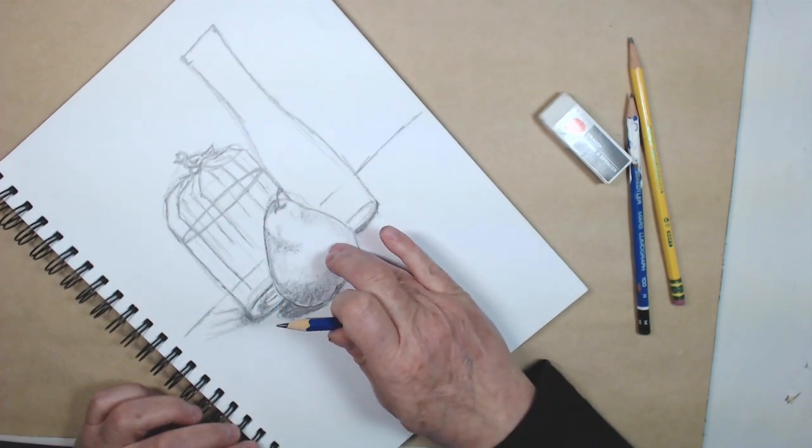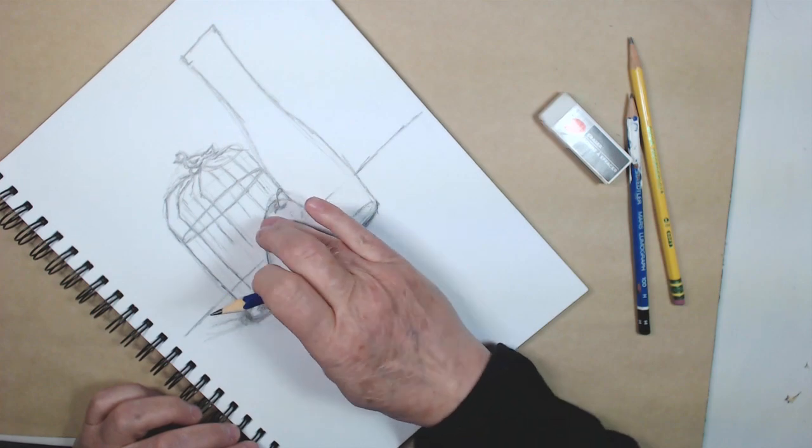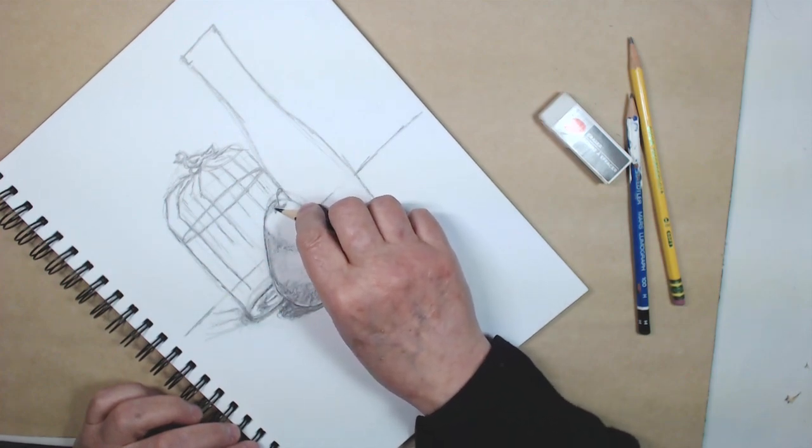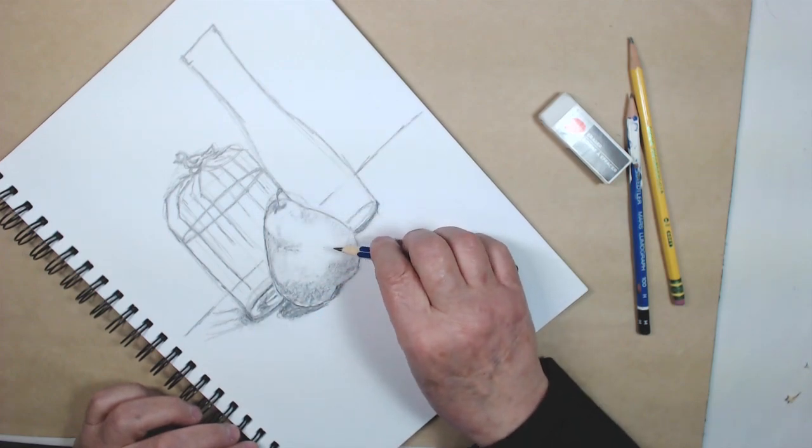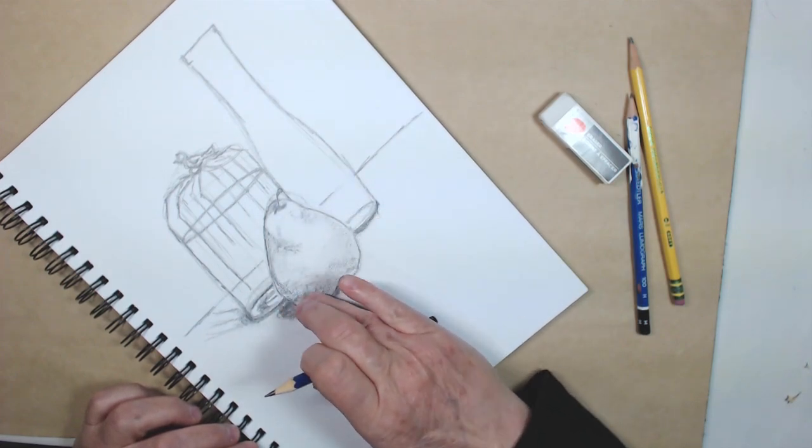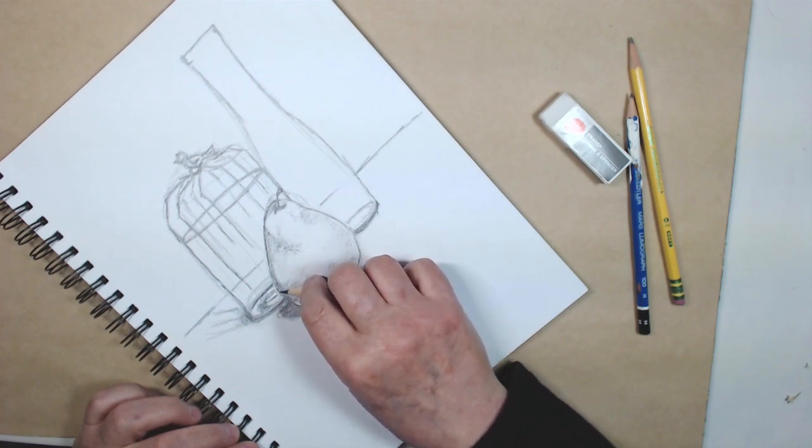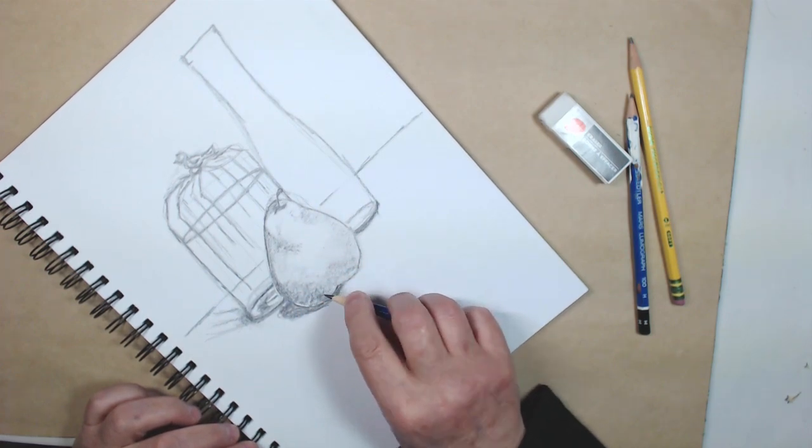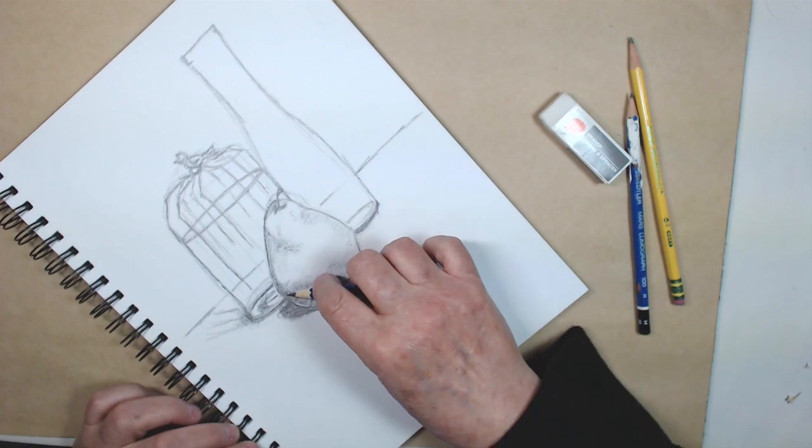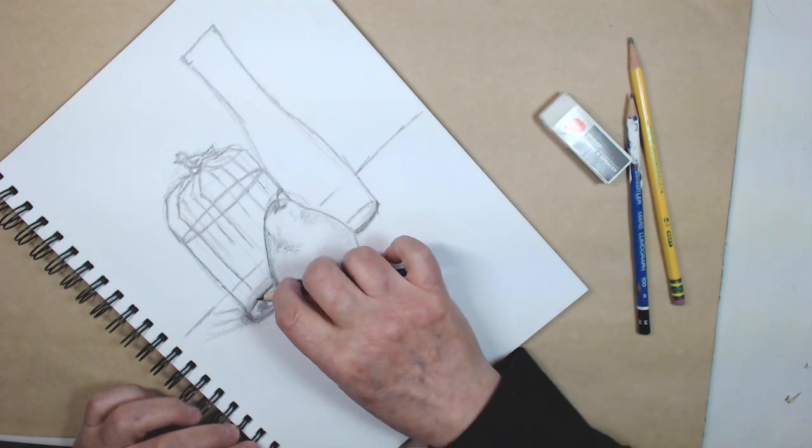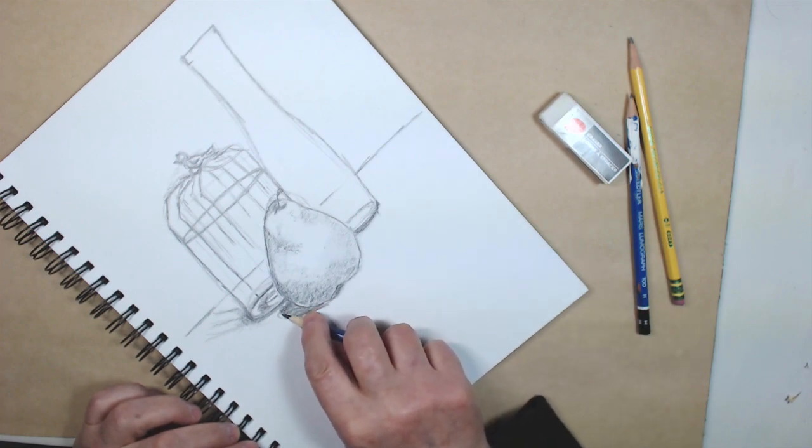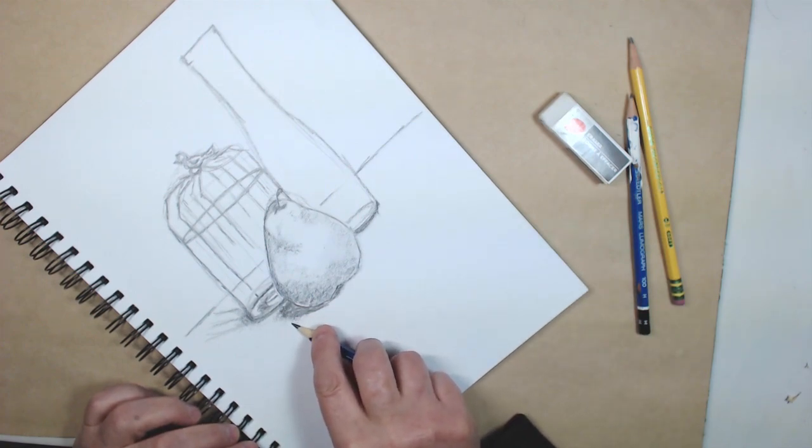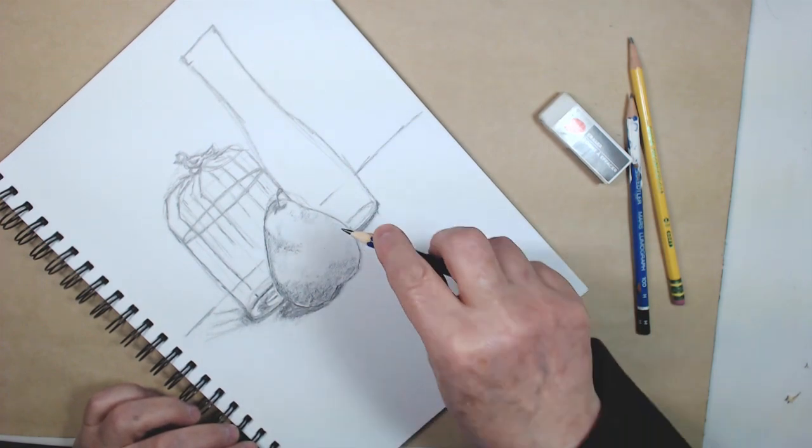I can use something to smudge the shadows a little bit if I feel that they're too sharp. And I don't need to go overboard. I shouldn't be darkening my whole drawing. There's no point.